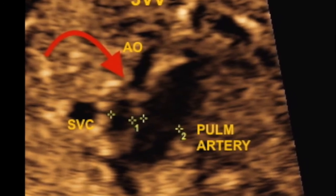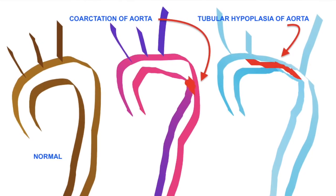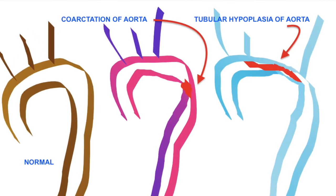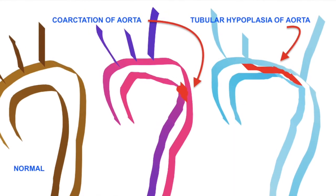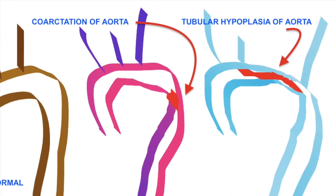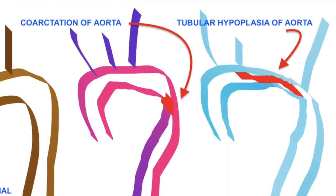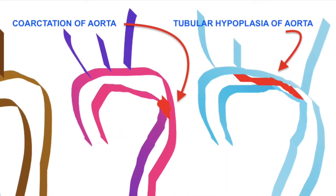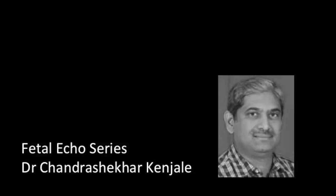Because of the associated mid-muscular VSD, this is a complex type of coarctation of the aorta — a case of long tubular hypoplasia of the aorta.